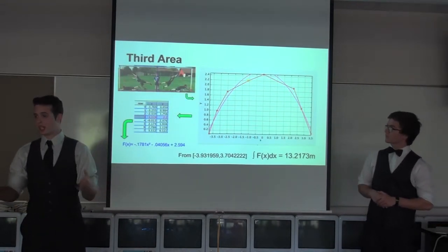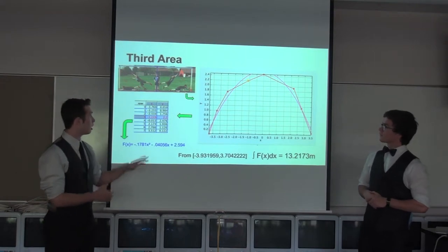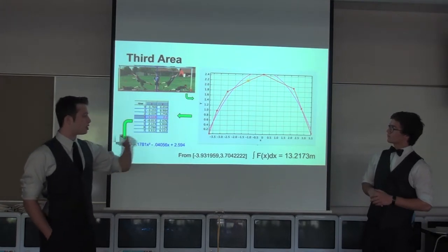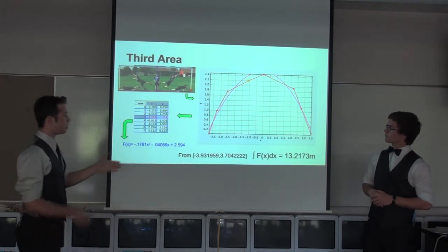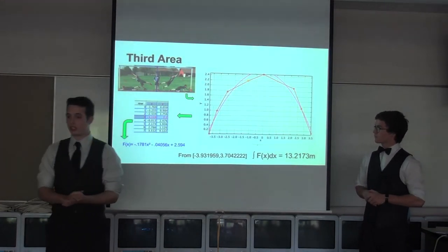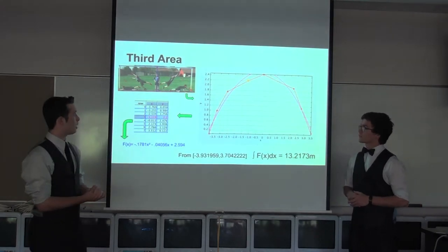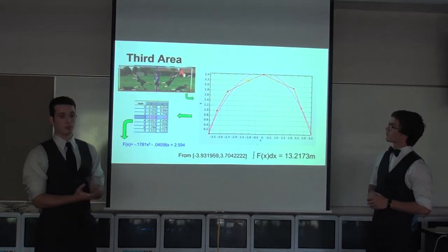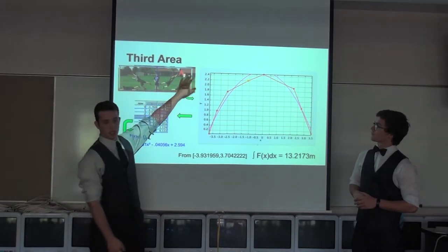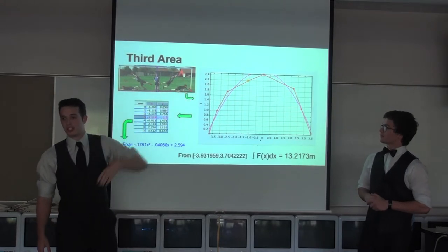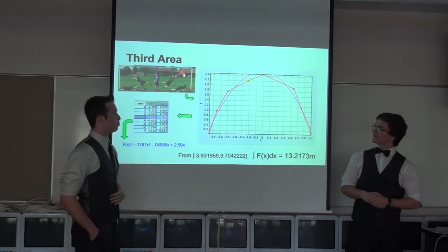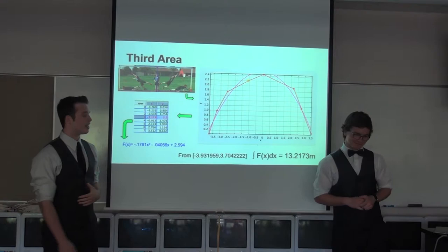We came up with the function for the smallest motion and integrated it from negative 3.90 to 0.065, coming up with 5.64 meters covered. Switching to the slightly larger area of the goalie falling one way or the other, he covers 6.197 to 8 meters. He can't cover both directions at the same time, so he has to pick. On the largest motion — leaping fully — we integrated from negative 3.9 to 3.7 and got 13.217, which is much closer to our original 17.837. This is the best option for a goalie, covering the most area, though goalies often struggle reaching the upper corners.